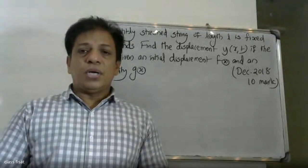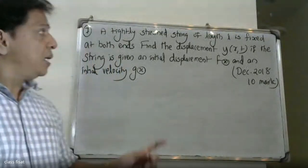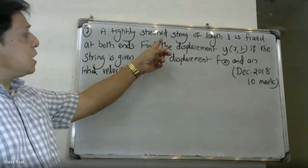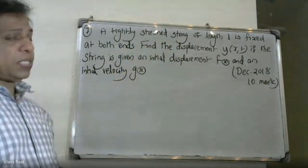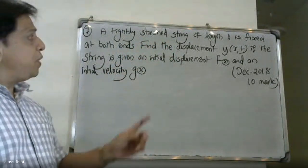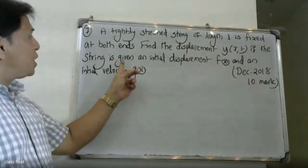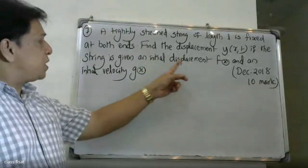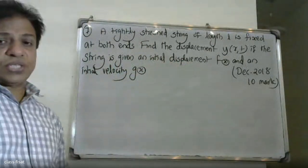Good morning students. This is a university question — a type 3 stated string of length L is fixed at both ends. Find the displacement Y of X of the string, if the string is given an initial displacement A of X and an initial velocity G of X.